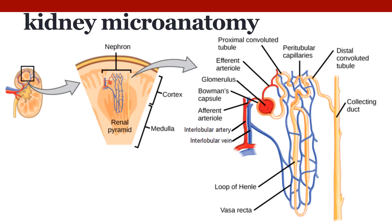The nephron is the microstructure that does the essential work of the kidney, taking a simple filtrate of blood and modifying it into urine. Each kidney has about a million nephrons. Blood enters through the renal artery, works through smaller and smaller arteries, eventually arriving at the afferent arteriole. Blood from the afferent arteriole is filtered through the glomerulus, and what comes out into the tubule is called filtrate. What remains in the blood exits through the efferent arteriole.